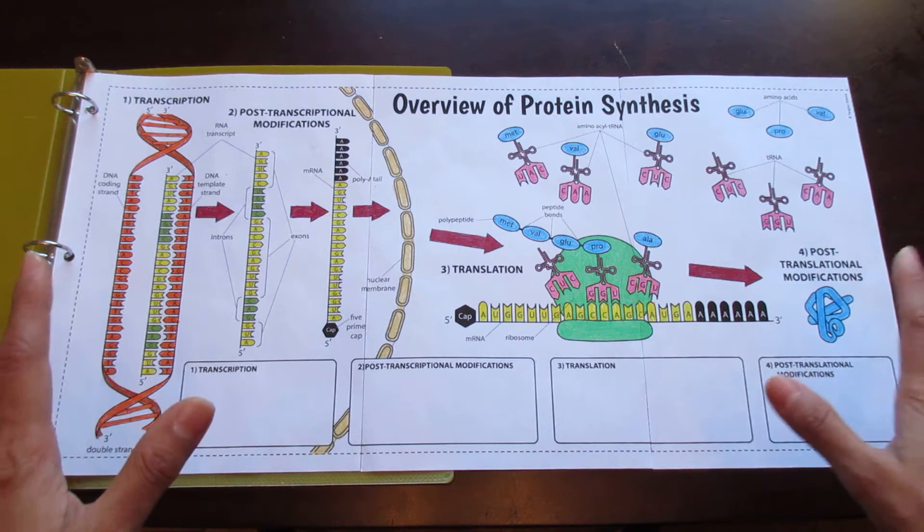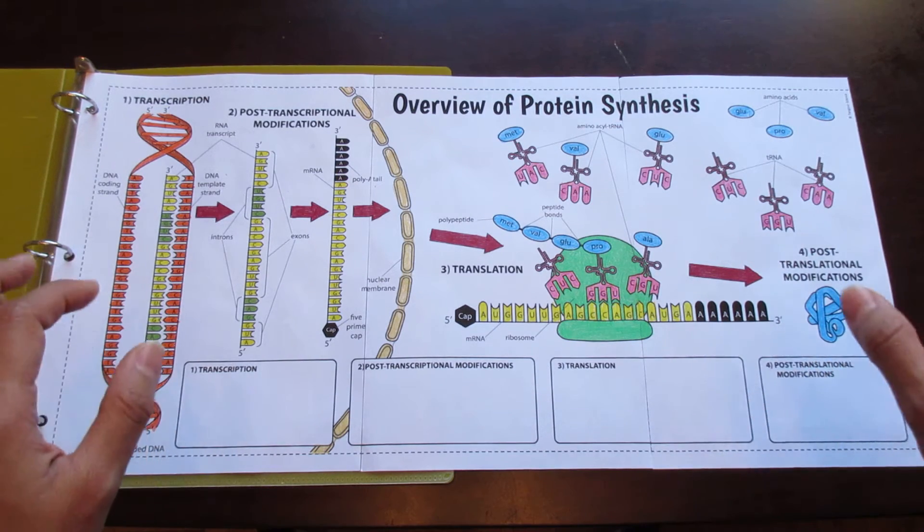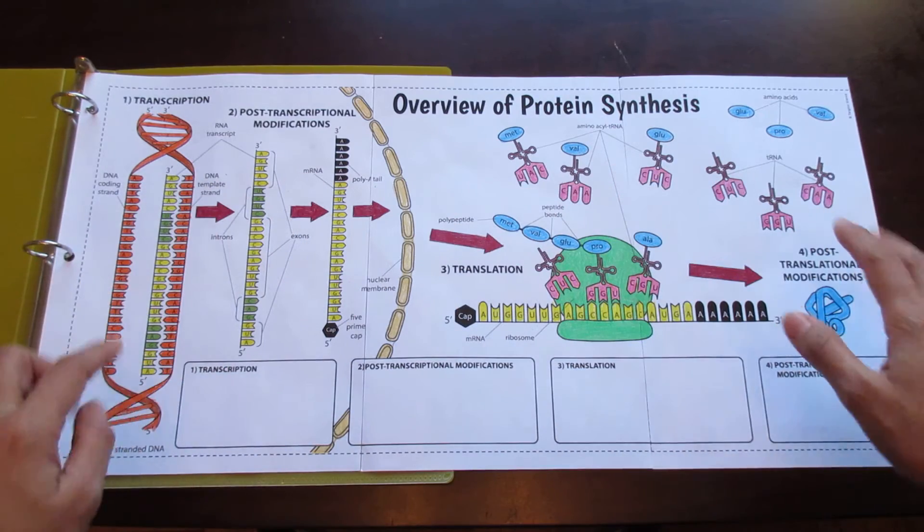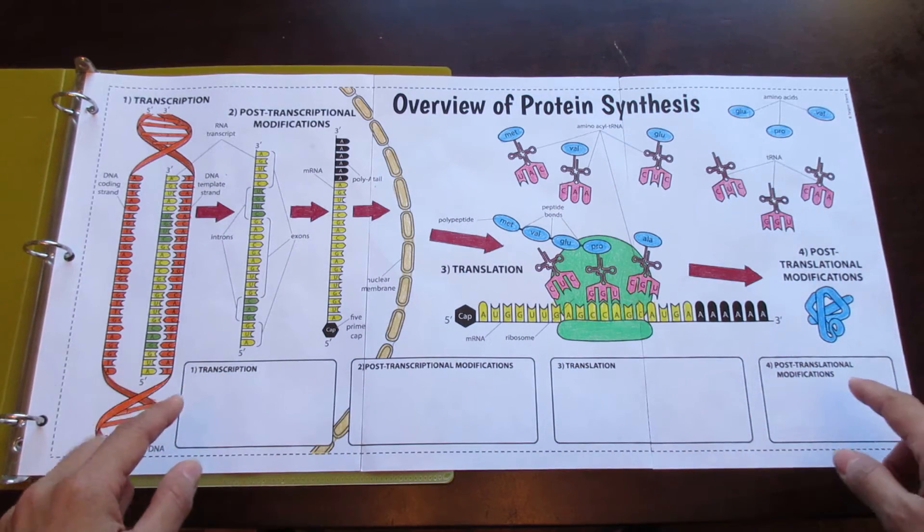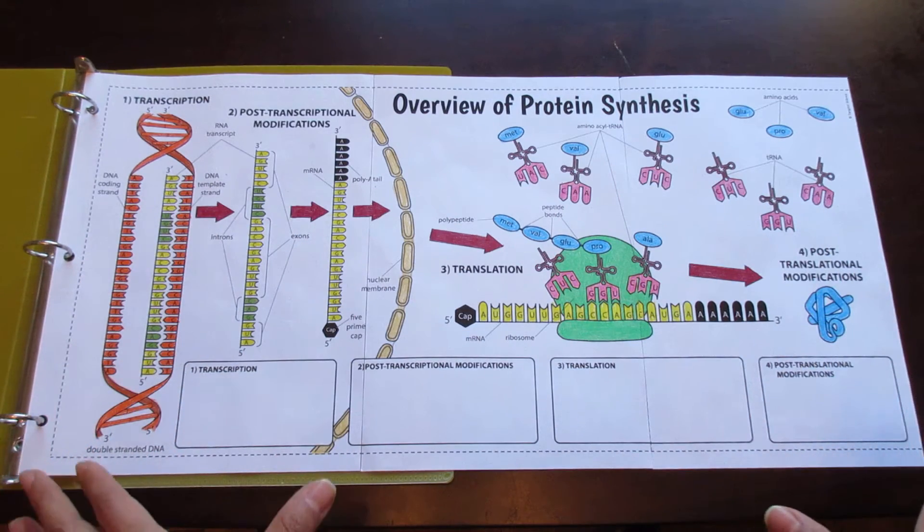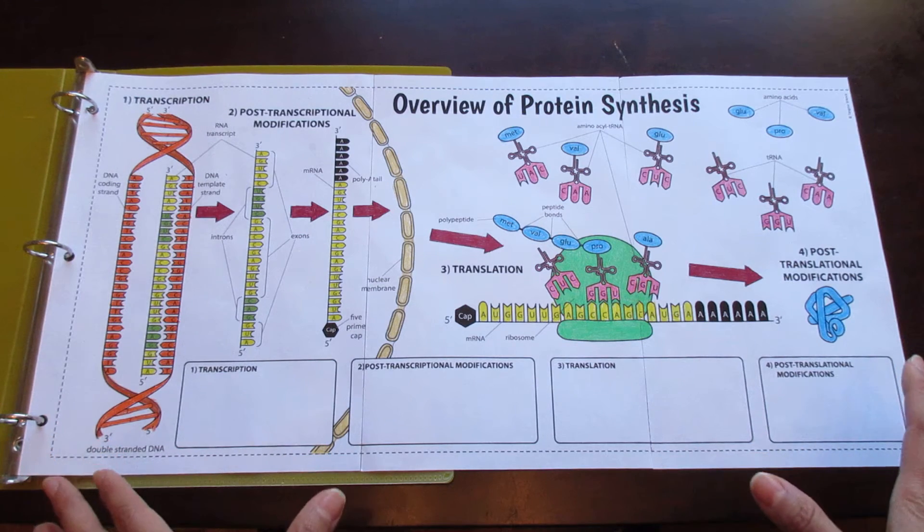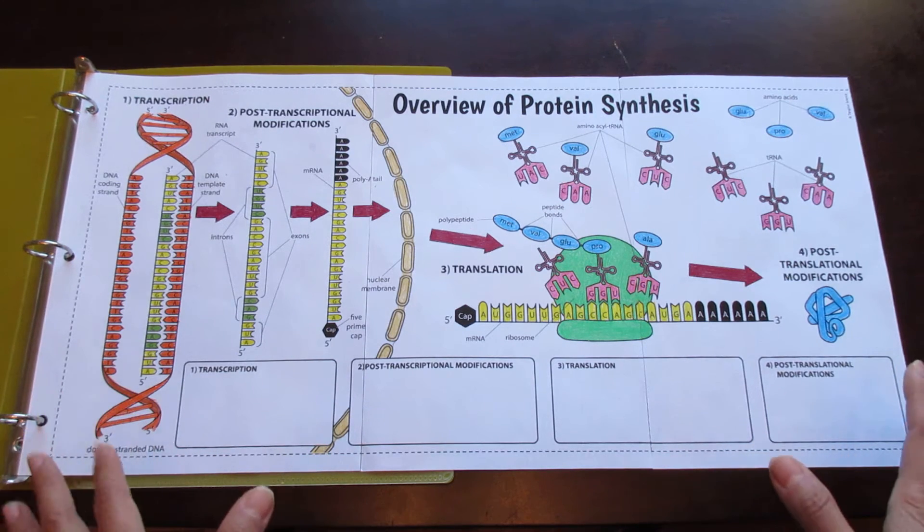Now let's take a close look at the different components of this foldable. This foldable contains the diagram and then it has boxes here for students to write down the descriptions of what's happening during the different stages of protein synthesis. I've broken it down into four stages.